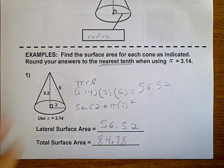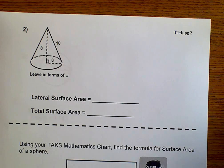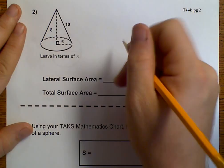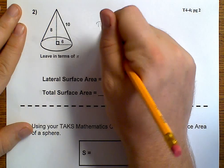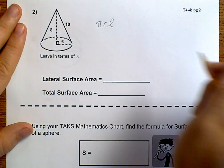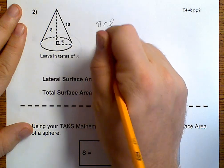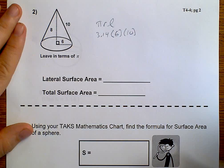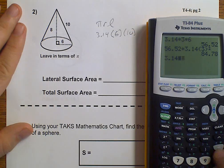Let's go ahead and move to the next page and example number 2. For lateral, we want pi times the radius times the slant height. 3.14 times 6 times 10. Gives us 188.4.